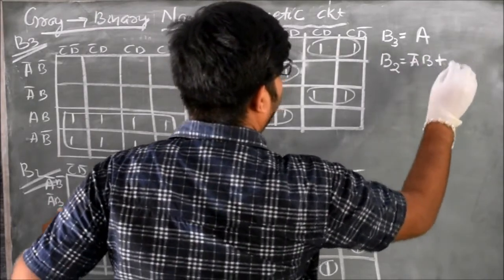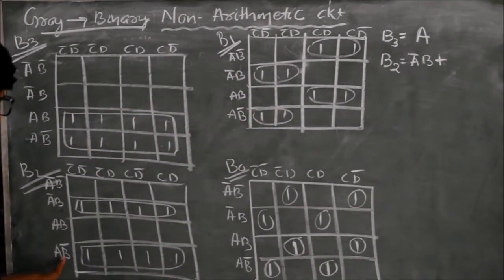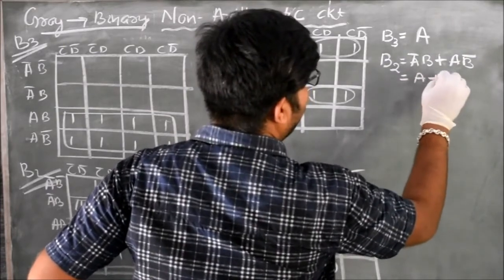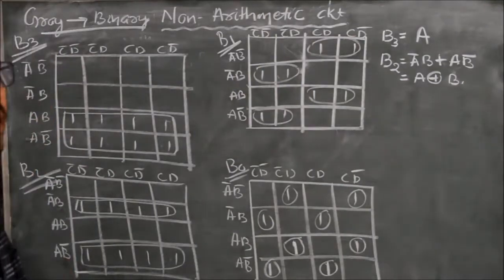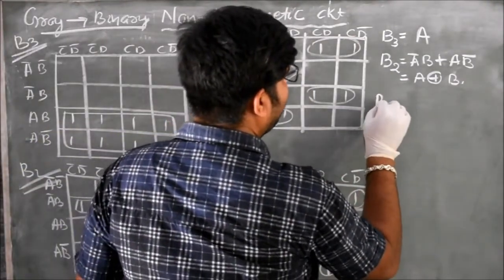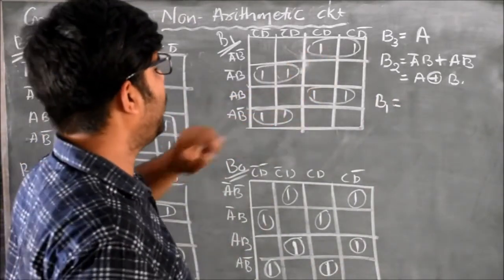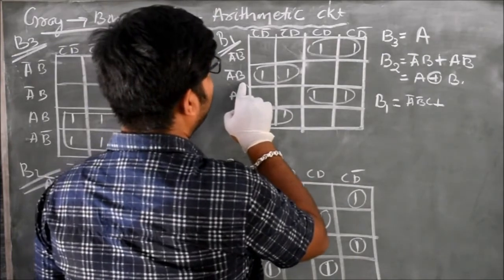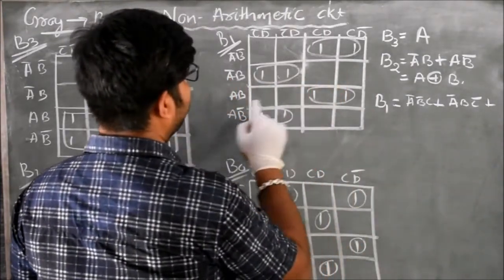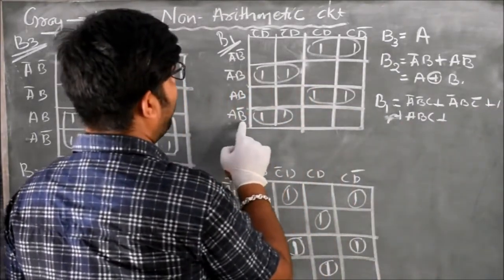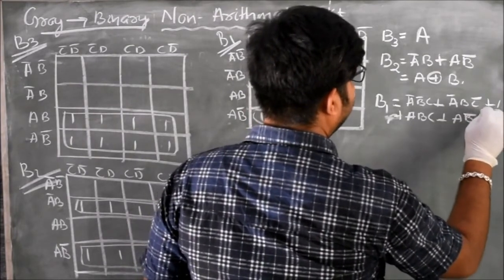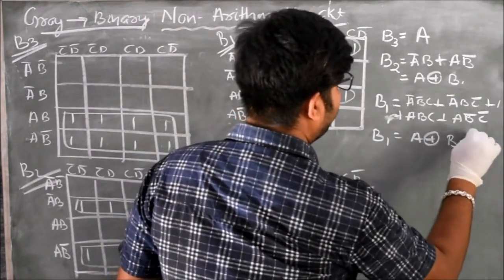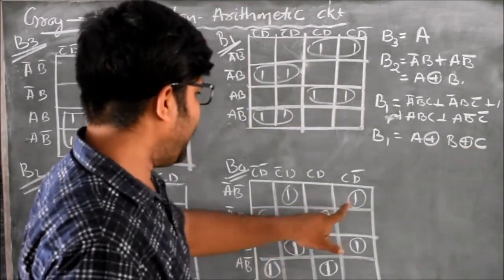For B2, examining the K-map rows: in one row A-bar·B is not changing, and in the other row A·B-bar is not changing. Therefore B2 is equal to A XOR B. For B1, the expression derived from the K-map loops is B1 = A XOR B XOR C, with individual sum-of-products terms confirming this result.